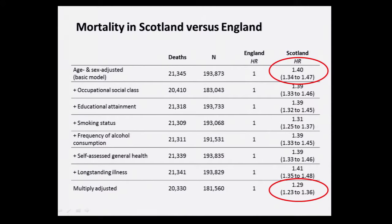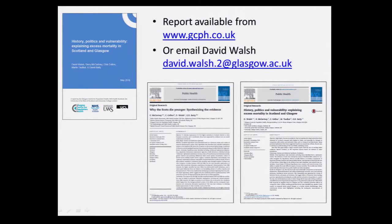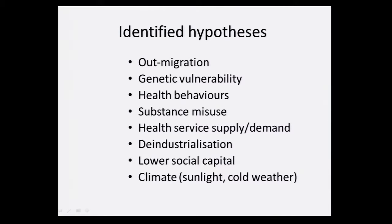We then went on to speculate about what data we would have liked to have collected but didn't. Colleagues David Walsh and Gerry McCartney have written a number of pieces on what could be the explanatory factors for the Scottish effect, and they came up with a collection of 40. If you're really struggling to sleep at night, there's a large document you can download, or David Walsh or I will happily send it to you. Around 40 different reasons were identified beyond the explanations we'd already examined empirically.